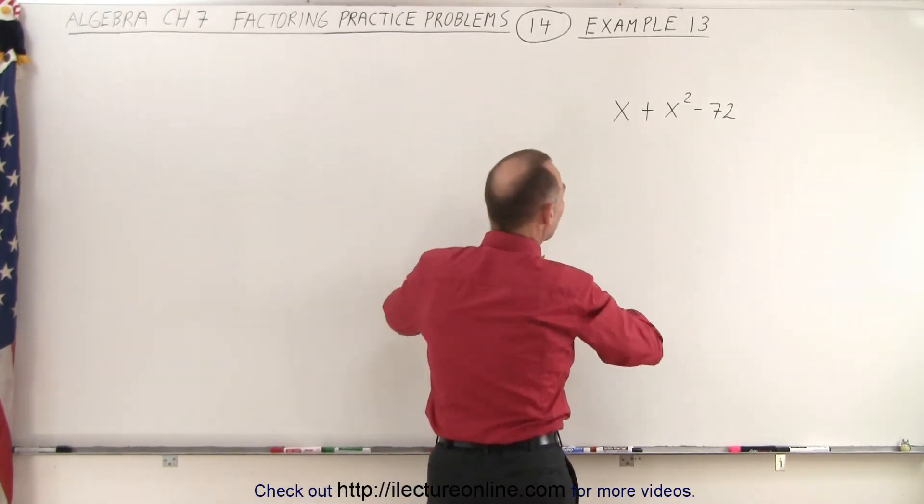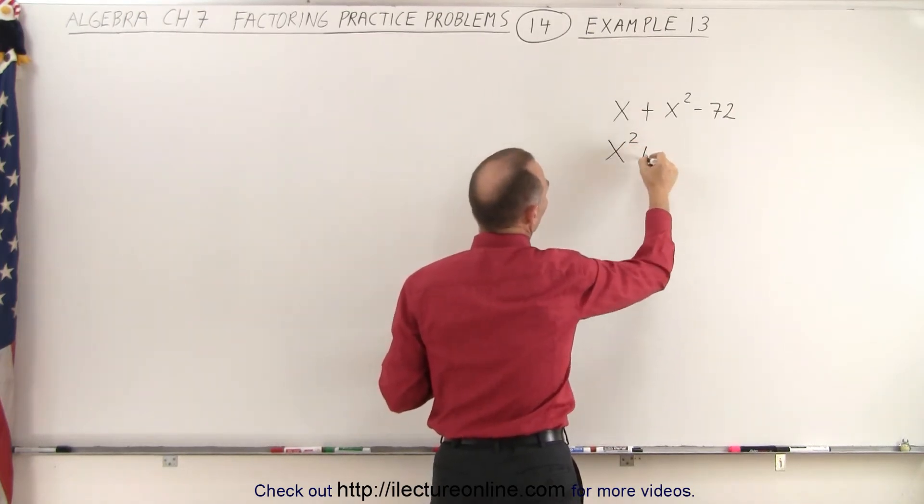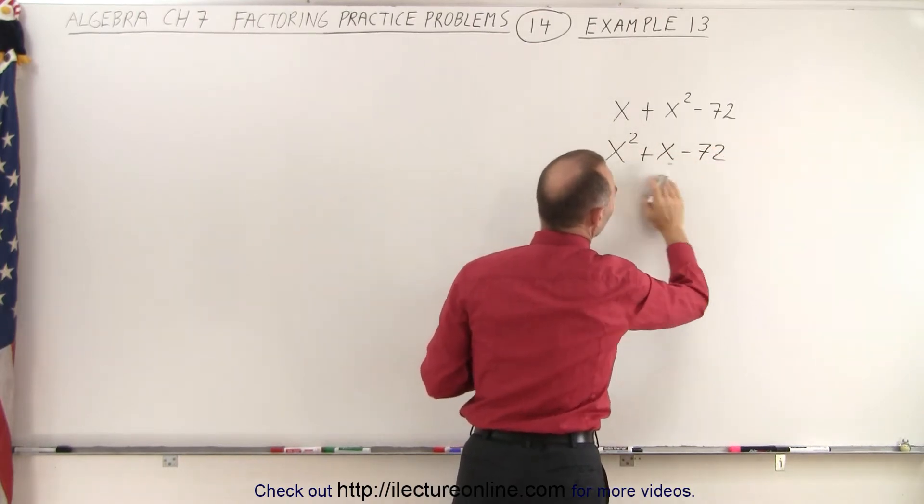So first, let's rewrite it into a better form, where the highest power comes first, x squared. Then we'll put this next, x, and then minus 72. That's a more familiar form.